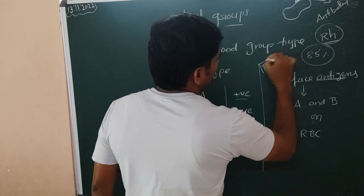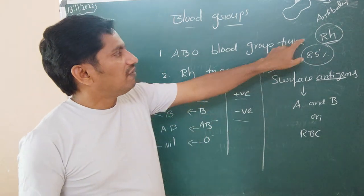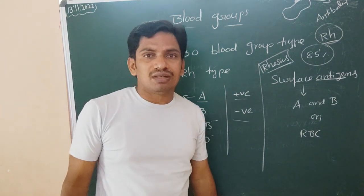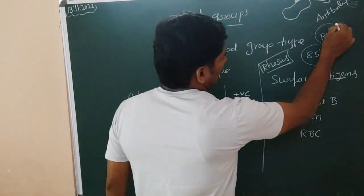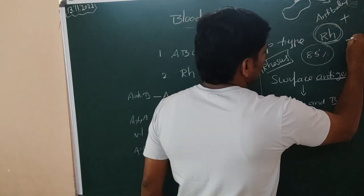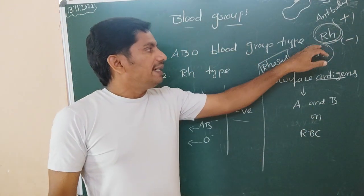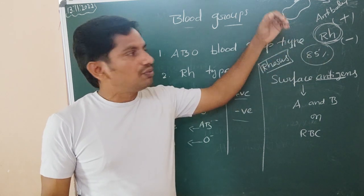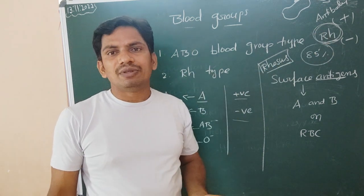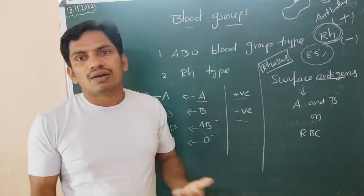In the rhesus monkey's blood, he found that one type of antigen is present. A similar one is also present in human beings. Those people who have this antigen we call RH positive, and those who do not have it are RH negative. 85% of the population has this RH-like antigen, but other people do not.